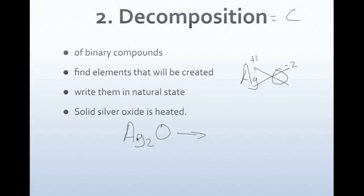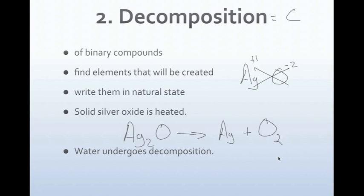Ag2O is going to break apart into silver and oxygen. When writing elements, we check if they're diatomic — silver is not, but oxygen is, so we put O2. Next example: water undergoes decomposition. Water is H2O, and it breaks up into hydrogen and oxygen. Both hydrogen and oxygen are diatomic, so we write H2 and O2.